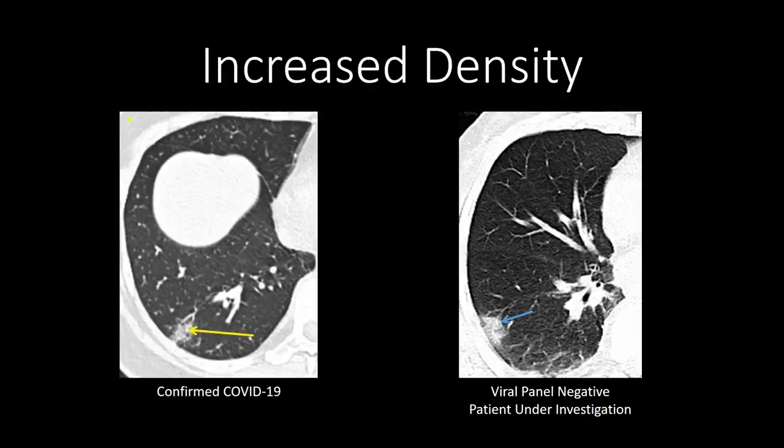In addition to traditional ground glass opacities with a rounded morphology, people presenting with COVID-19 and other viral pneumonias are sometimes reported with a more dense round opacity, progressing from ground glass opacification toward more focal consolidation. You can see it remains peripheral and poorly defined.